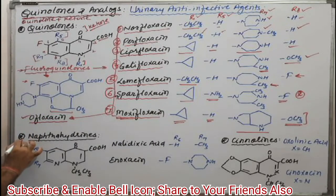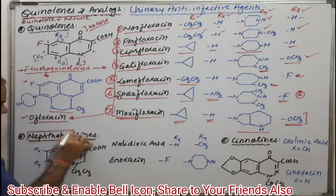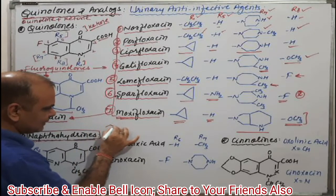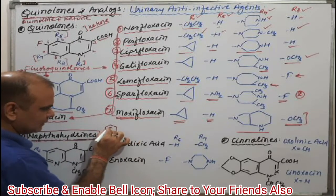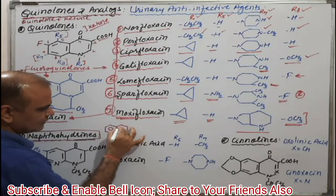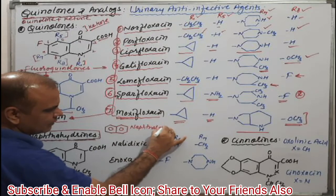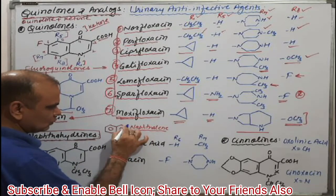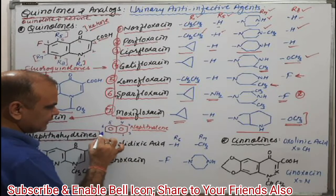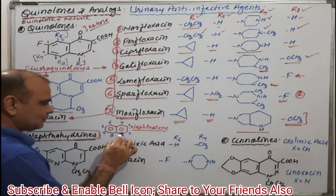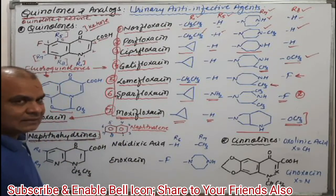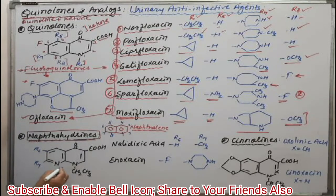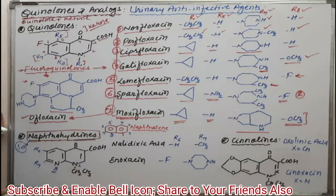Come to the next category, that is naphthyridine. What is naphthyridine? As you know, naphthalene is two benzene rings side by side. If we give numbering to naphthalene: 1, 2, 3, 4, 5, 6, 7, and 8. If two carbons are substituted by nitrogen, that is naphthyridine. Here we are substituting the 1st position as well as the 8th position — that's why generally it is known as 1,8-naphthyridine.